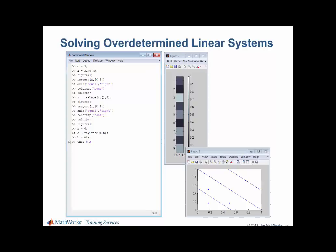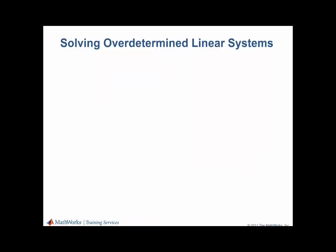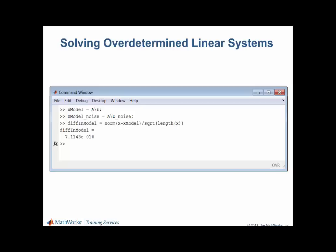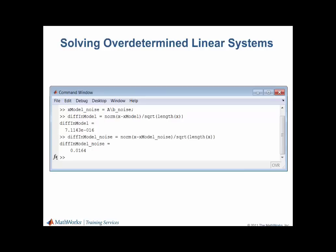Using the whos command, we can see that A is a 12 by 9 matrix. We can then add noise to the measured intensities as we did previously. Finally, we can back-calculate the density model from the simulated intensities measured using the backslash operator. We can then calculate the error between the densities obtained from the model and the original densities. Once again, the ideal model is almost the same as the original. For the realistic model with noise, we can see that the error is close to the 1% noise that we introduced. In this case, the solution is a least-squares solution because the A matrix is overdetermined. However, the result is similar to the square system, and we have seen how the backslash operator can be used to solve both determined and overdetermined systems.